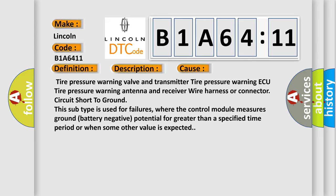This diagnostic error occurs most often in these cases: tire pressure warning valve and transmitter, tire pressure warning ECU, tire pressure warning antenna and receiver, wire harness or connector, circuit short to ground. This subtype is used for failures where the control module measures ground (battery negative) potential for greater than a specified time period or when some other value is expected.